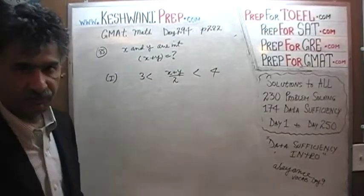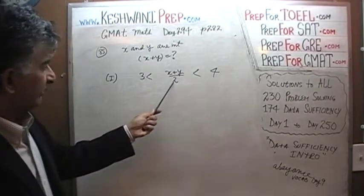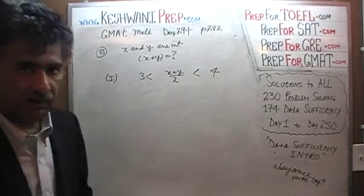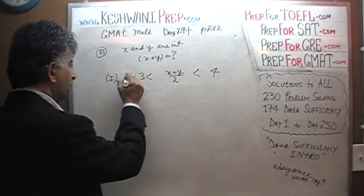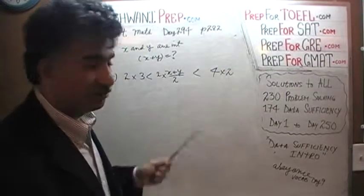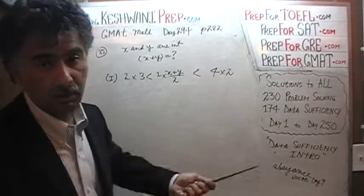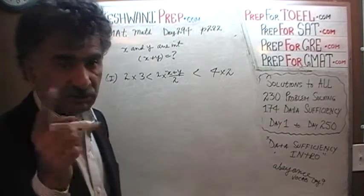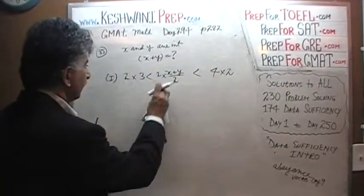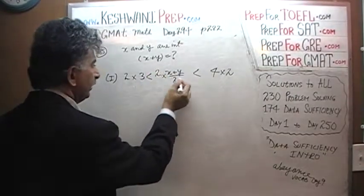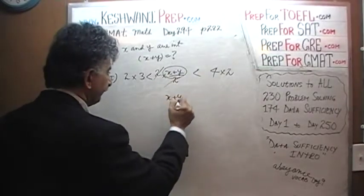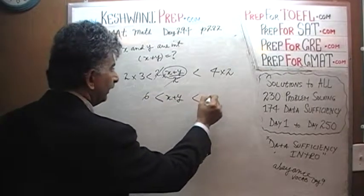The question is how much is X plus Y? Here we see a 2 at the bottom. Let's get rid of the 2 by multiplying the entire inequality by 2, which we can quite easily do because 2 is a positive number. We can multiply the entire inequality by any positive number without having to worry about switching the direction of the inequality. That 2 is going to cancel out, and that tells us that X plus Y lies between 6 and 8.